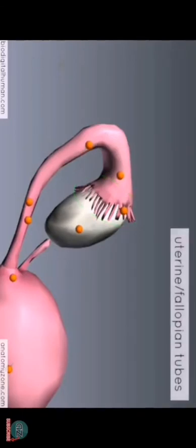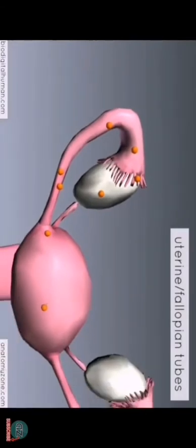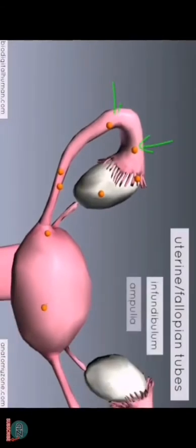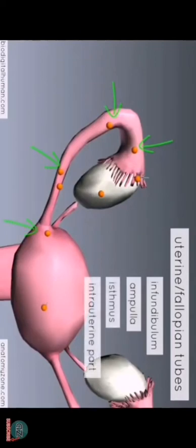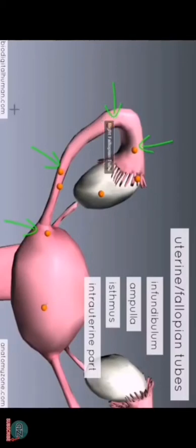The uterine tube has four parts: an infundibulum, an ampulla, an isthmus, and an intrauterine part. You've got the fimbriae, and then the wide distal part is known as the infundibulum. Then we've got the ampulla, which is the middle and longest part of the uterine tube. It's the most common site for fertilization of the egg by the male sperm — that's an important point to remember.